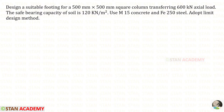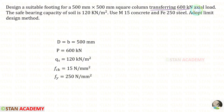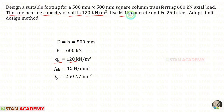Hello everyone. Today we are going to design a square footing. Let us read the question and write the given data. Design a suitable footing for a 500 mm by 500 mm square column, transferring 600 kN axial load. The safe bearing capacity of the soil is 120 kN/m². Use M15 concrete (FCK = 15) and Fe 250 steel (FY = 250). Adopt the limit state design method.